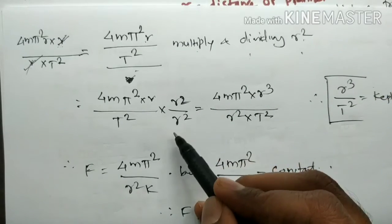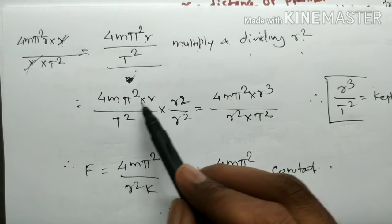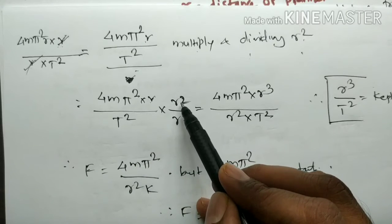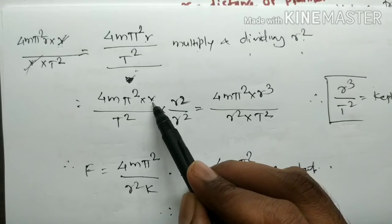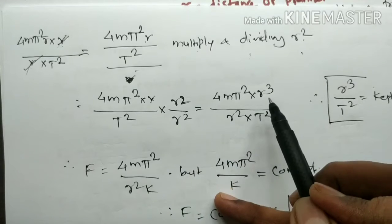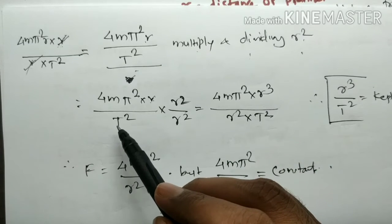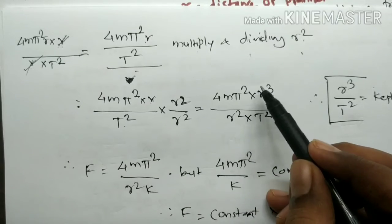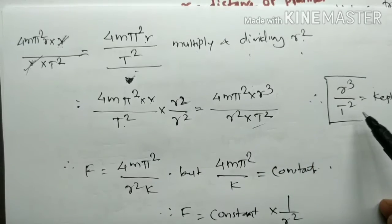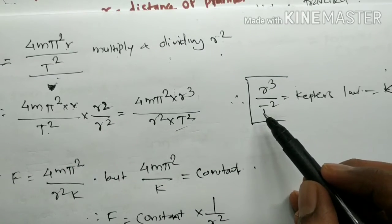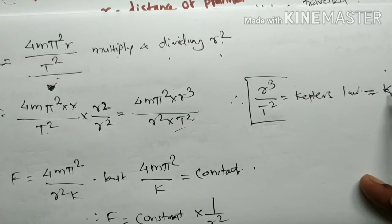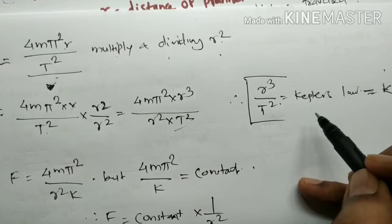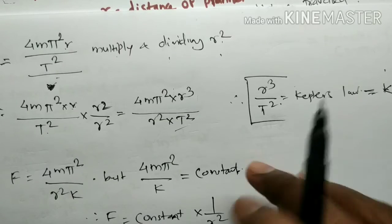Multiplying and dividing by r² on both sides, and using r³, we get F = 4mπ²·(r³/T²)·(1/r²). Since r³/T² is Kepler's law constant K, this term is known as Kepler's constant — r³ upon T² is the Kepler's law constant.